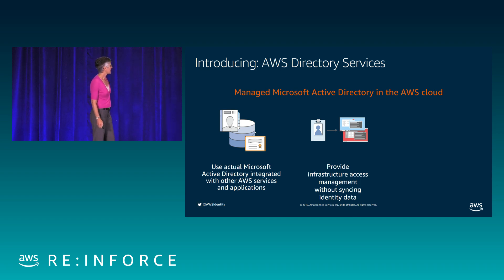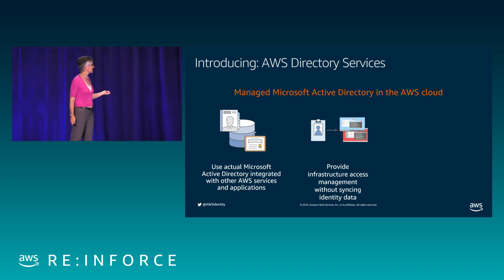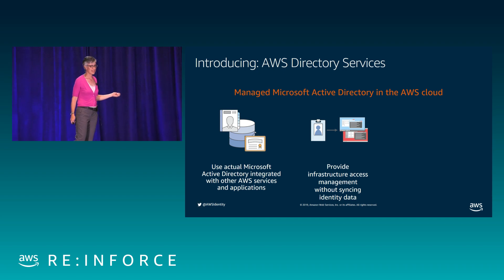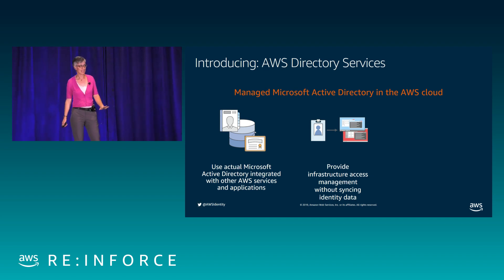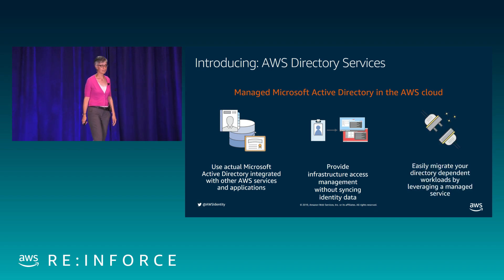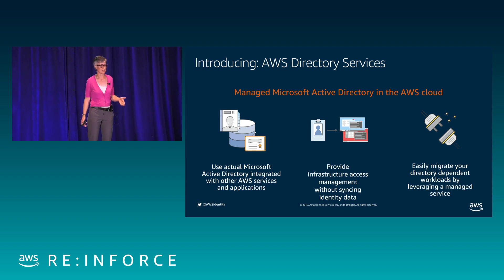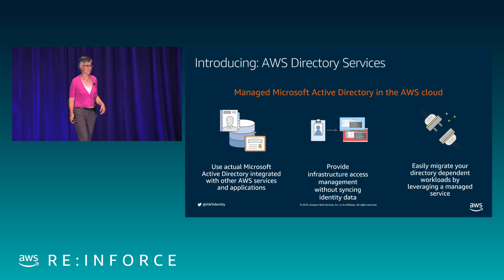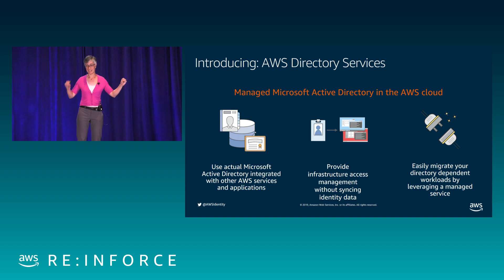AWS Secrets Manager does the same thing, except instead of doing it for AWS credentials, it's doing it for arbitrary secrets like database credentials and third-party API keys, converting them into short-term credentials by doing rotation for you behind the scenes. The mental model to aim for is short-term credentials everywhere — short-term credentials for the humans so that they don't mess things up, for the machines so you don't have to worry about rotation, and even for arbitrary secrets, so you enhance your security posture across the board.